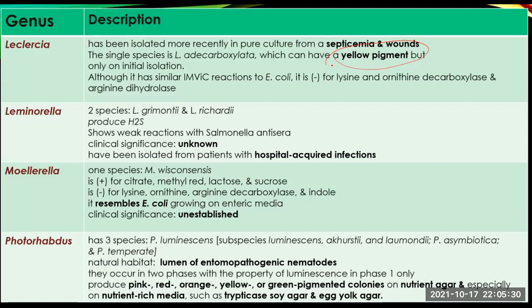Leminorella has two species. Organisms under this genus produce hydrogen sulfide and show weak reactions with Salmonella antiserum. Similar to Moellerella, their clinical significance is really unknown. Leminorella has been isolated from patients with hospital-acquired infections.